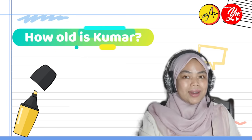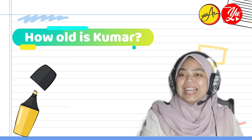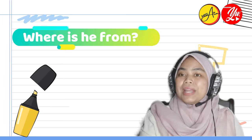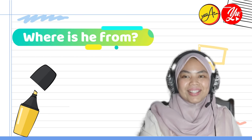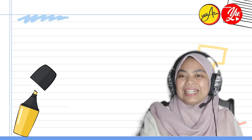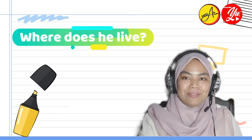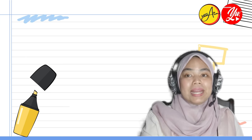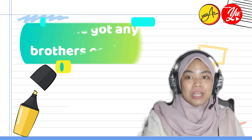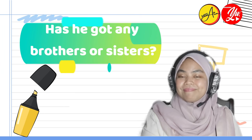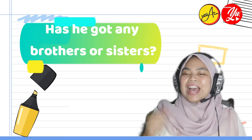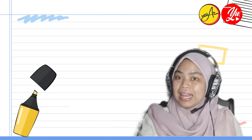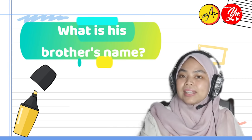How old is Kumar? Kumar is 10 years old. Where is he from? He is from Malaysia. Number 3 — where does he live? Kumar lives in Melaka. Question 4 — has he got any brothers or sisters? Yes, he has one brother. So the next question is, what is his brother's name?